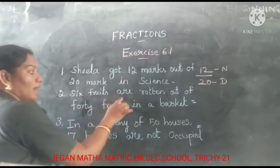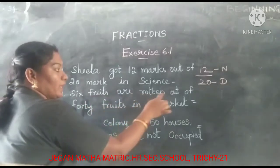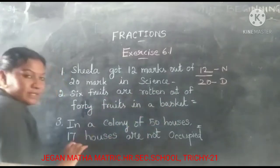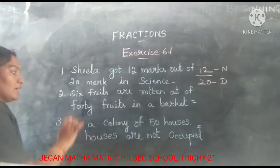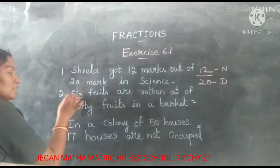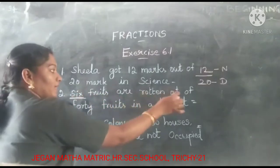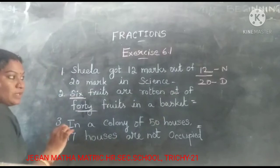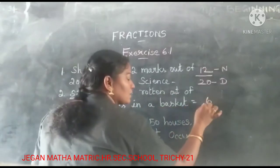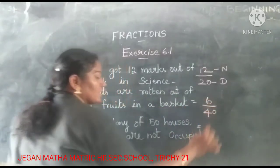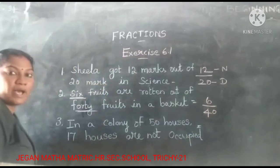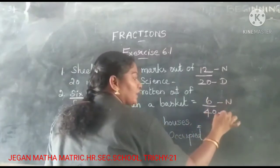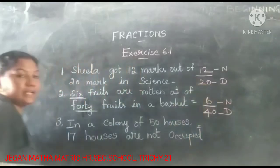Second one: 6 fruits are rotten out of 14 fruits in the basket. So the fraction is 6 by 14. 6 is the numerator and 14 is the denominator.